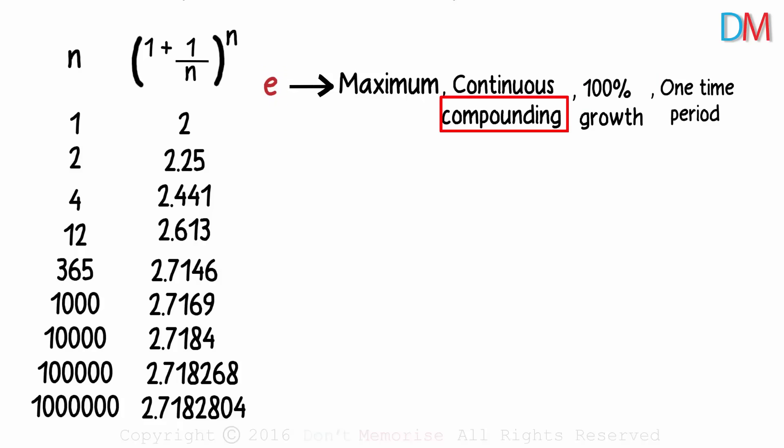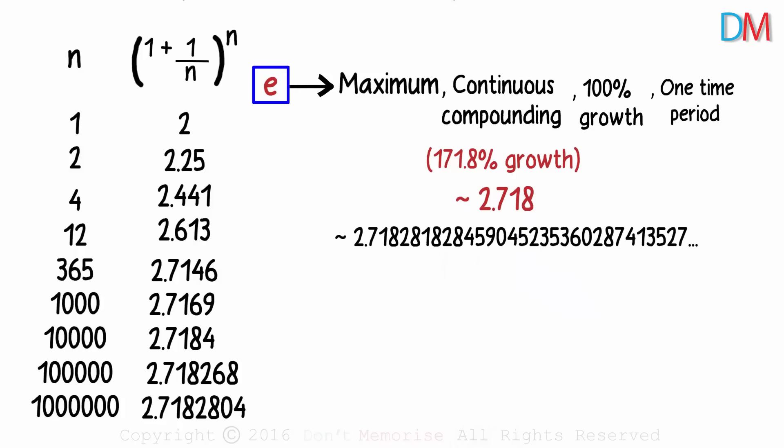Notice what compounding does. The first result is one hundred percent without compounding. One dollar would become two dollars. But after continuous compounding, one dollar will become two point seven one eight dollars approximately. That would be a growth rate of one hundred and seventy one point eight percent. That's like the maximum growth we can have. So E is approximately two point seven one eight. It's an irrational number, which means the digits after the decimal point do not repeat and go on forever.